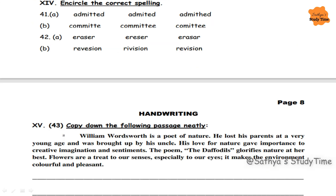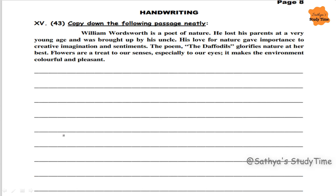Next, encircle the correct spelling: admitted with double T is the correct spelling. Committee with double M and double T. Eraser — the first one is the correct answer. Revision: R-E-V-I-S-I-O-N. Next, handwriting is given — copy down the following passage neatly in your notebook.